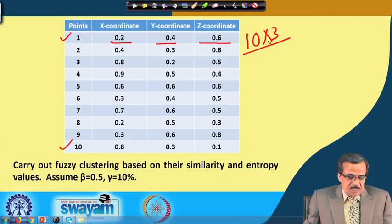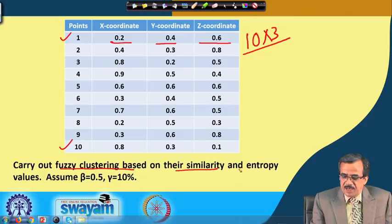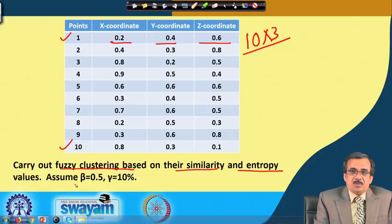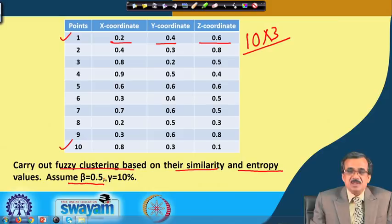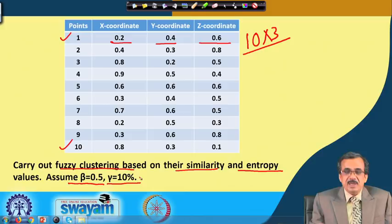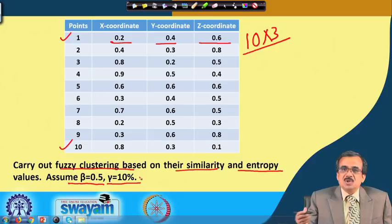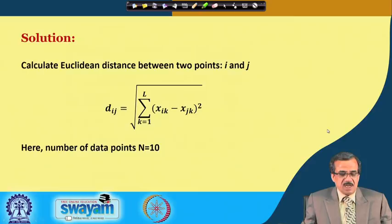We are going to carry out the fuzzy clustering based on similarity and entropy. We assume that the threshold value for similarity, that is beta, is 0.05, and to determine whether there is any outlier, we consider the concept of gamma and we assume that gamma is equal to 10 percent.